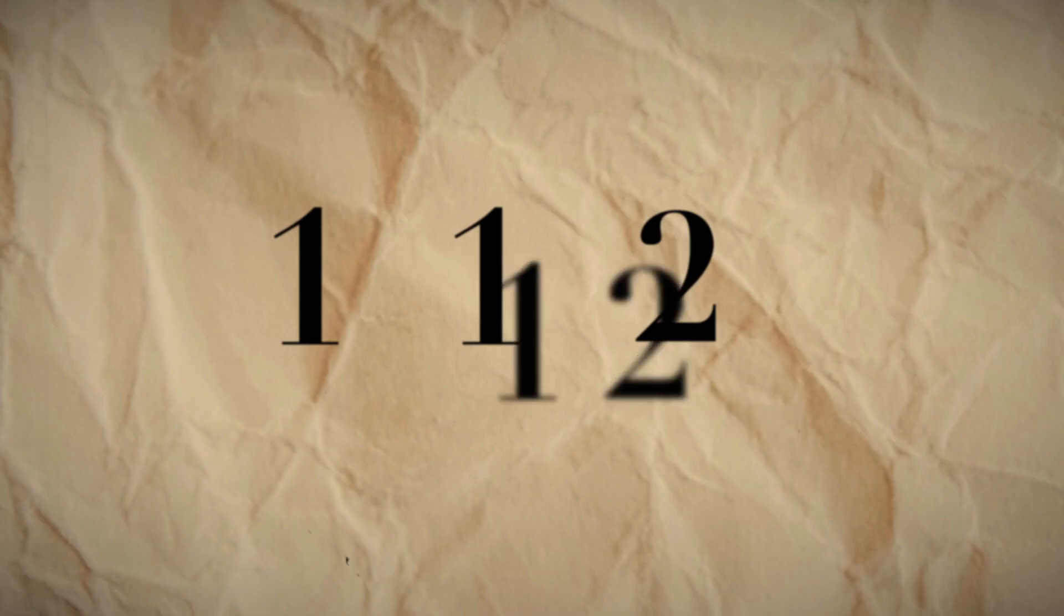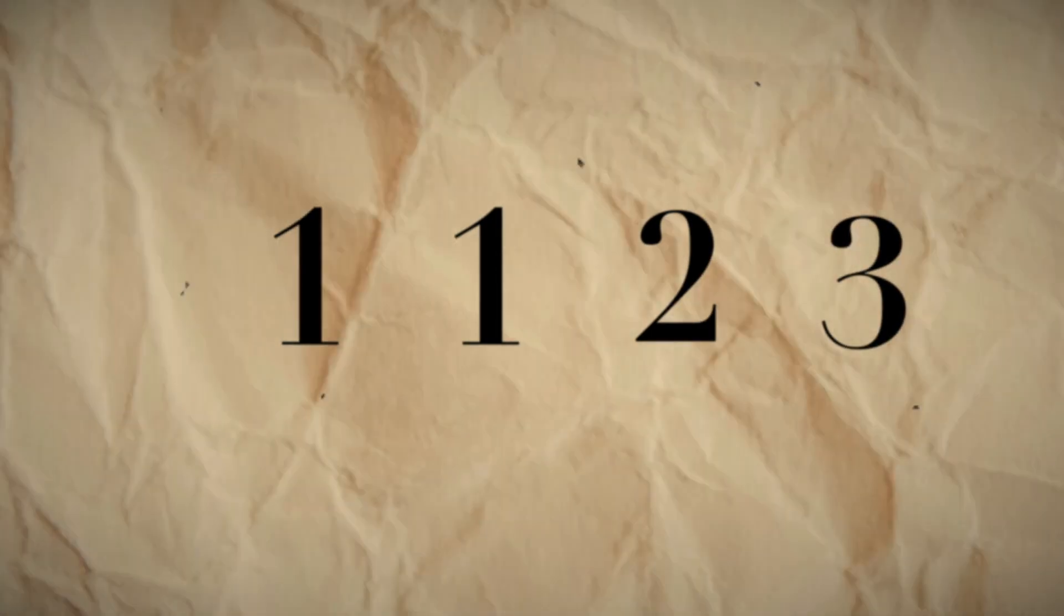The sequence starts off with two ones. We add them to get two, which is what we put as our next term. 2 plus 1 is 3, and we can continue on like this, adding the previous two terms to get the next term.